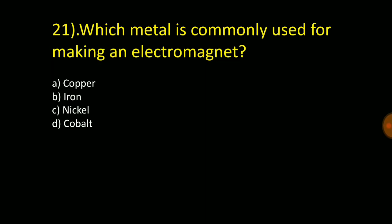Which metal is commonly used for making an electromagnet: copper, iron, nickel, or cobalt? And the answer is iron.